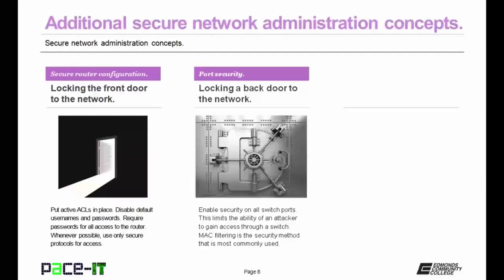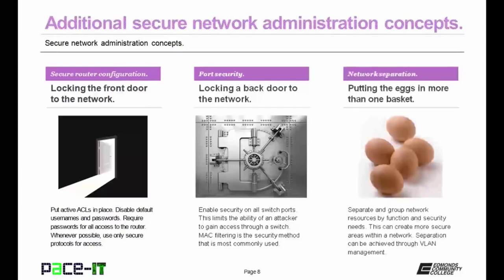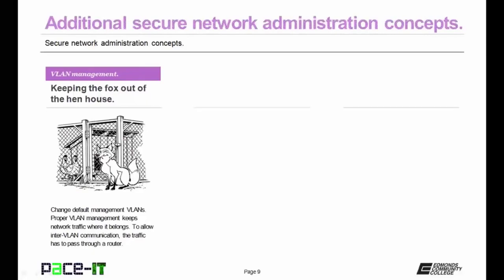MAC filtering is the security method most commonly used to secure switch ports. Then there's network separation — putting your eggs in more than one basket. Separate and group network resources by function and security needs to create more secure areas within a network. Network separation can be achieved through VLAN and VLAN management. Proper VLAN management keeps network traffic where it belongs, and to allow inter-VLAN communication, the traffic has to pass through a router.